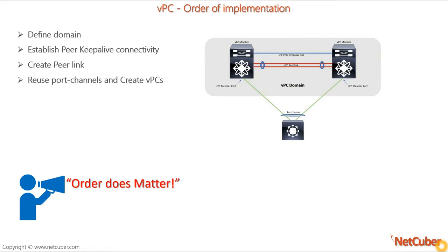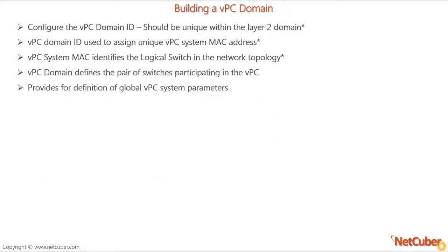The order of implementation is very important when doing a vPC implementation. First, define the domain. Then establish peer keepalive connectivity, which is a Layer 3 interface connectivity. Then create the peer link, which should be a trunk link. Then create the port channel and assign the vPC. We need to use a unique domain ID because the vPC domain ID is used to assign a unique vPC system MAC address, which helps identify the third device during vPC formation. The vPC system MAC identifies the logical switch in the network topology.